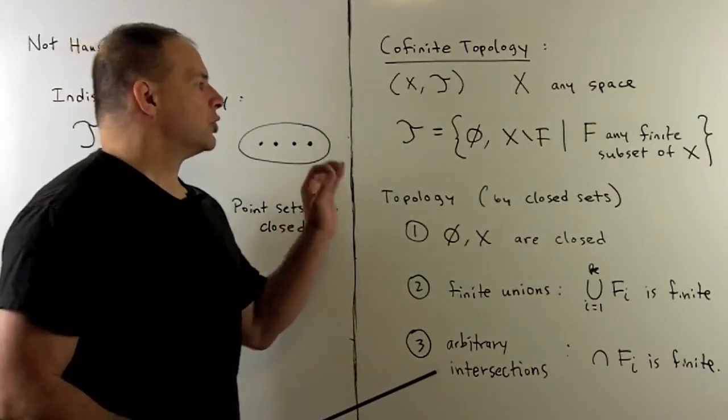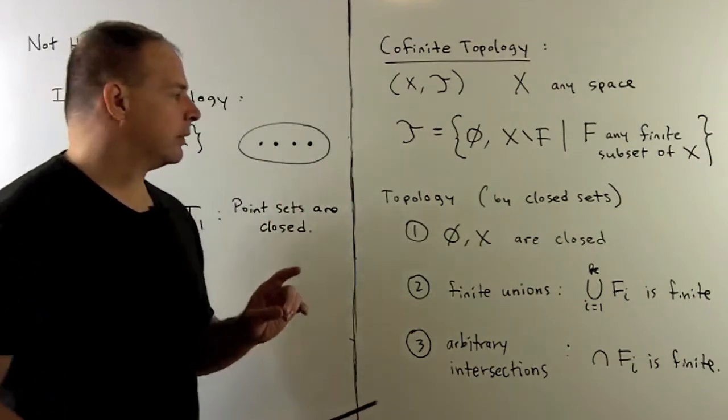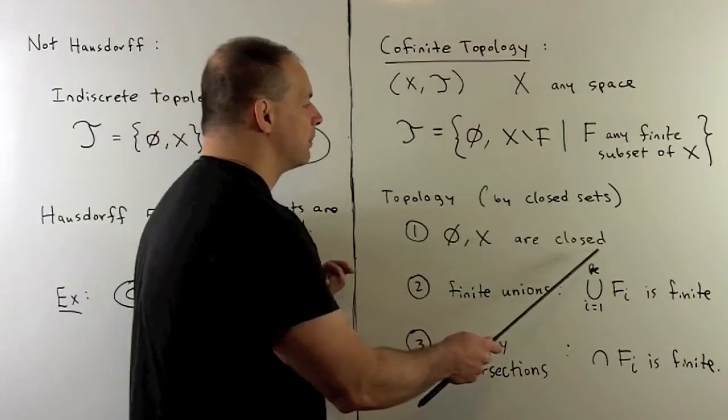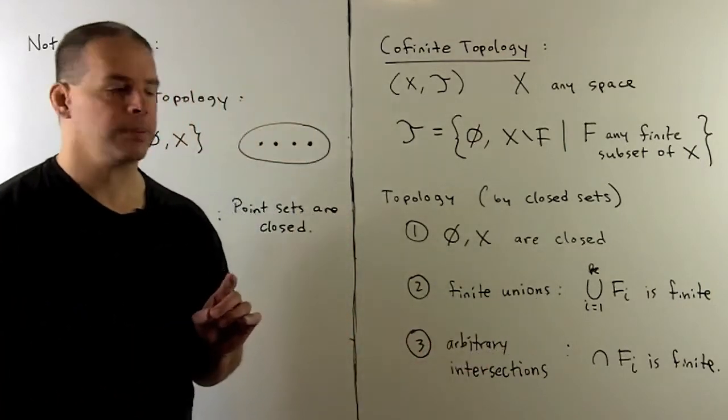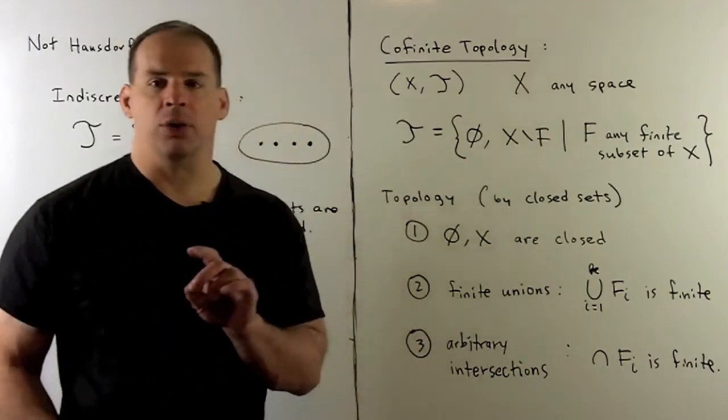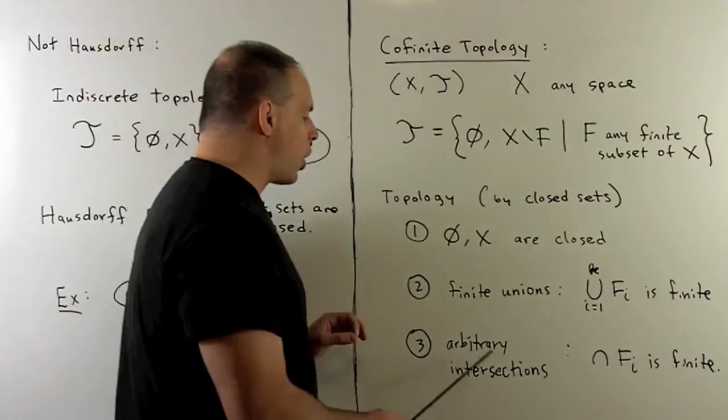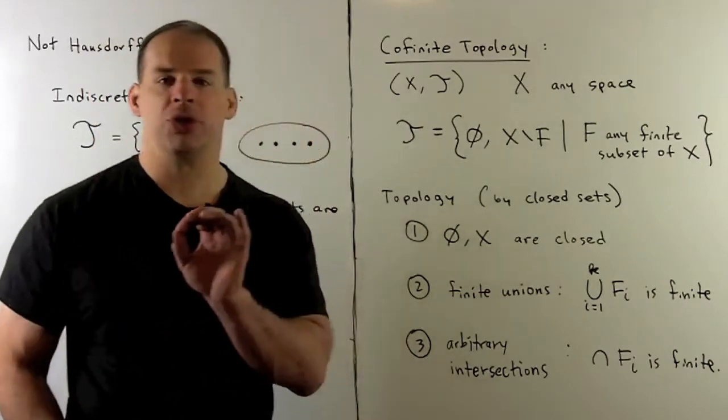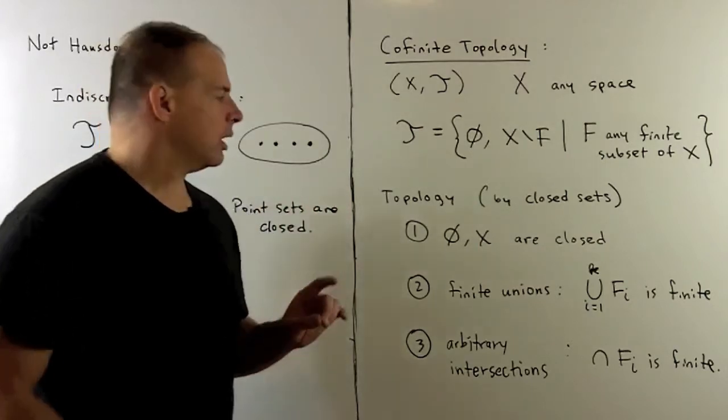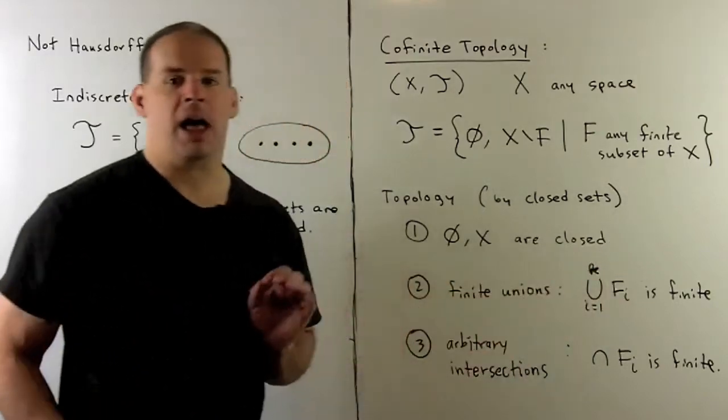To show that this is a topology, we use the definition of topology using closed sets. We would want the empty set in our space to be closed sets, and that follows by definition. For finite unions, the finite union of finite sets is again a finite set. If we take arbitrary intersections, arbitrary intersection of finite sets is again going to be a finite set. So we have the conditions for topology satisfied.